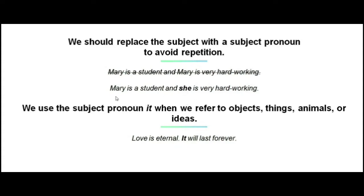'She' refers to Mary. Also note that we use the subject pronoun 'it' when we refer to objects, things, animals, or ideas. For example: 'Love is eternal. It will last forever.' The pronoun 'it' refers to the word 'love'.